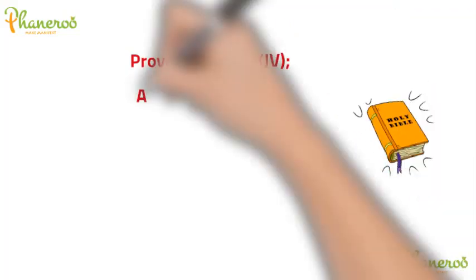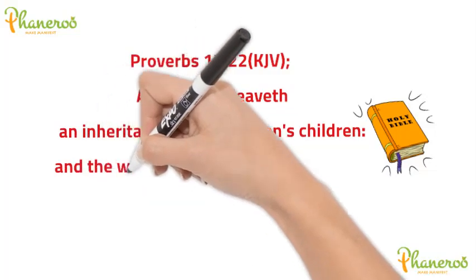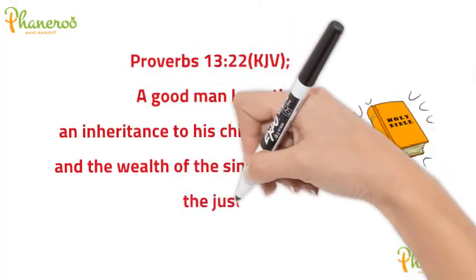Proverbs 13 verse 22, KJV: A good man leaveth an inheritance to his children's children, and the wealth of the sinner is laid up for the just.